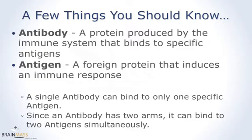Before beginning, we will discuss some definitions. An antibody is a protein produced by B cells from the host immune system that binds to specific antigens. An antigen is a foreign protein that induces an immune response in the host. A single antibody can recognize only one specific antigen; however, since an antibody has two arms, it can bind two antigens simultaneously.